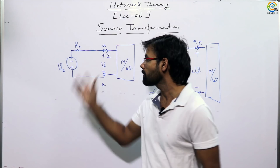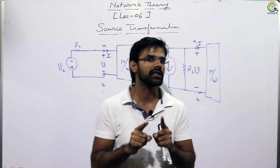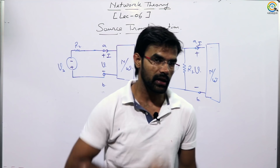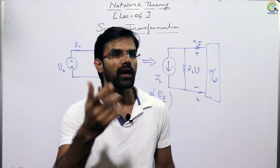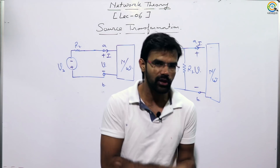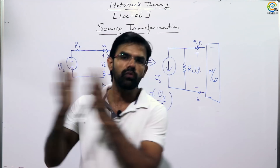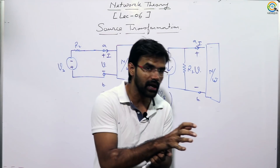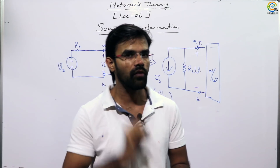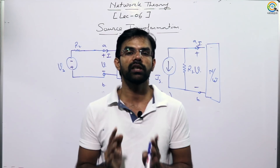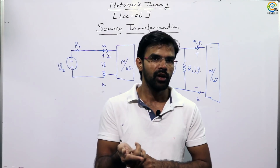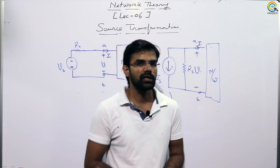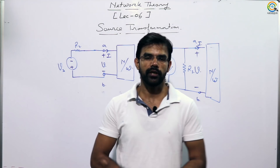Source transformation applies in exactly the same way for dependent sources. If a dependent voltage source — controlled by some voltage or current — has a resistance in series with it, you can convert it to a dependent current source in parallel with that resistance. But one important condition: the controlling variable must not be part of the portion undergoing source transformation. If it is part of that portion, you cannot apply source transformation there.